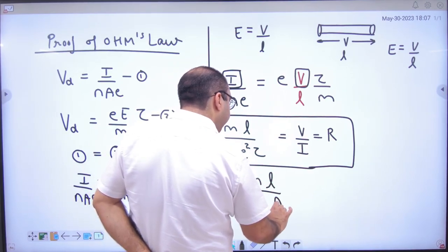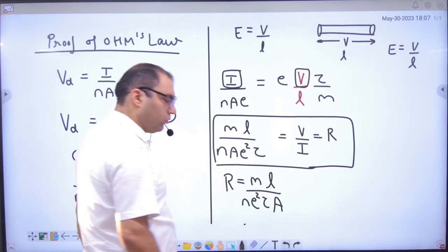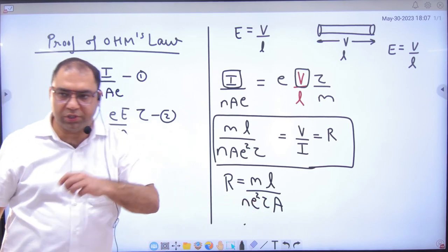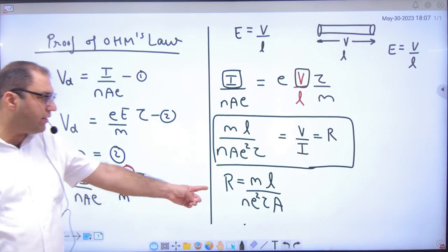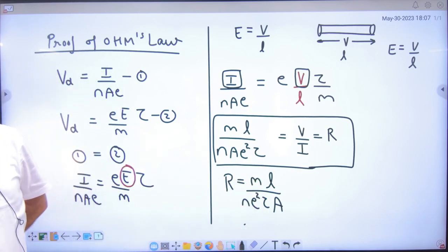Here formula is resistance M L divided by area N E square into Tau. In formula, resistance formula please note: resistance formula is M length of conductor divided by N E square Tau into A. Okay.